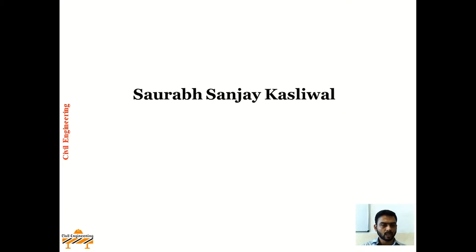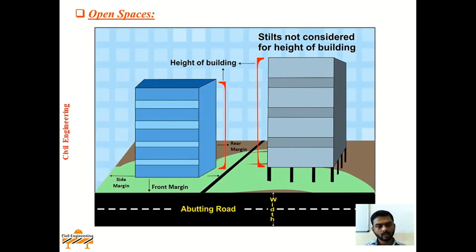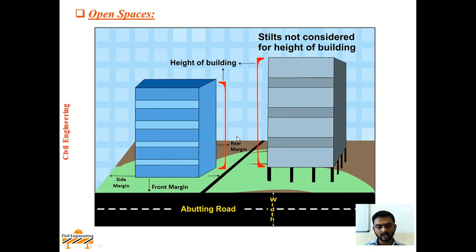Hello everyone, I welcome you all in the YouTube channel Civil Engineering. Today we will be learning on the topic open spaces. Open spaces here are nothing but front margin, side margin, another side margin and rear margin. The margin which is provided in the front of the building, on the side of the building and at the rear end of the building is nothing but open spaces.